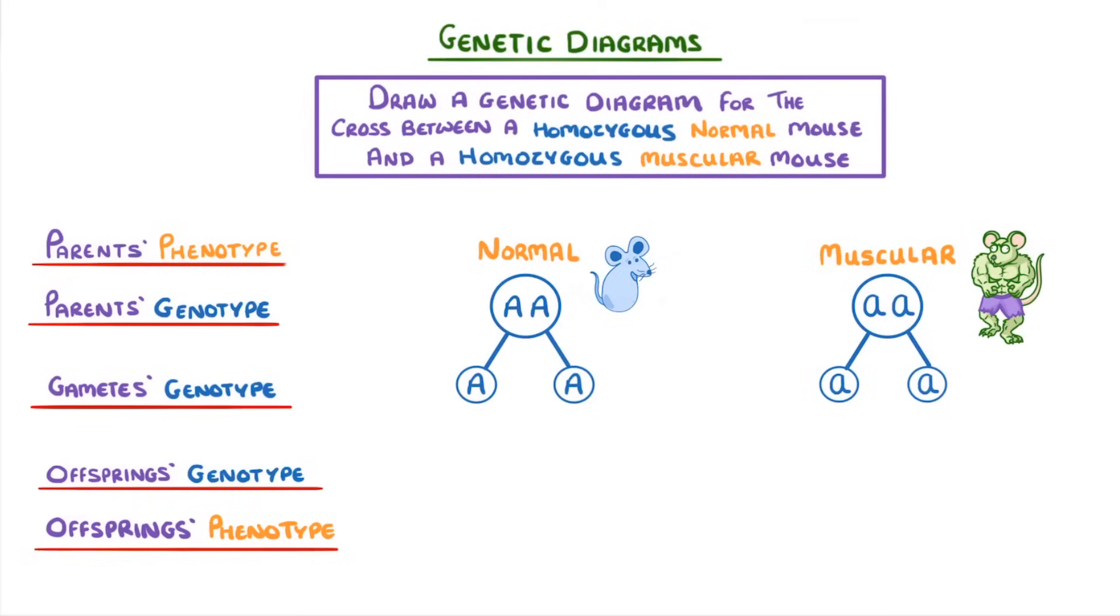Now to find the offspring's genotypes, we have to do all the possible combinations of the two parents' gametes. So for one of these we would take the capital A gamete from the normal mouse and combine it with a lowercase a from the muscular mouse to give us a capital A lowercase a genotype.